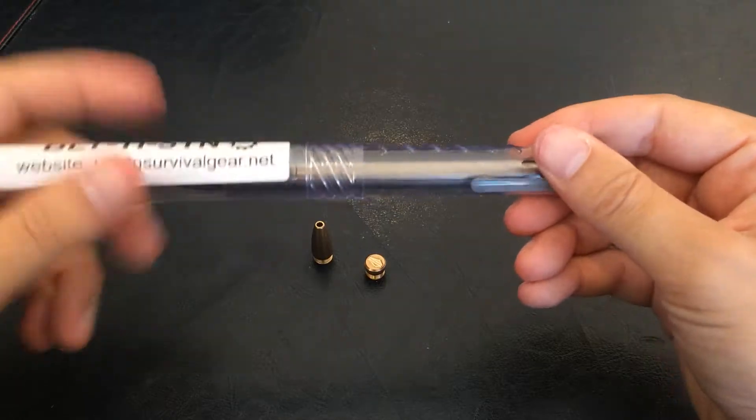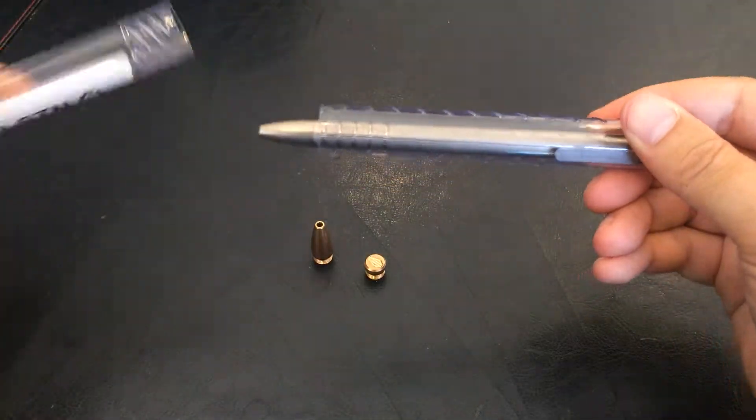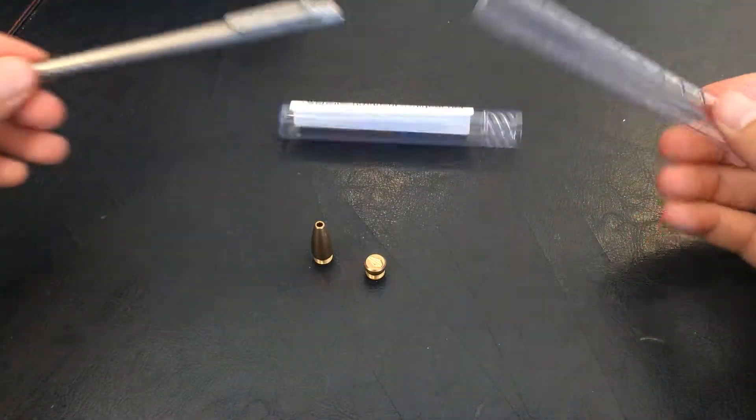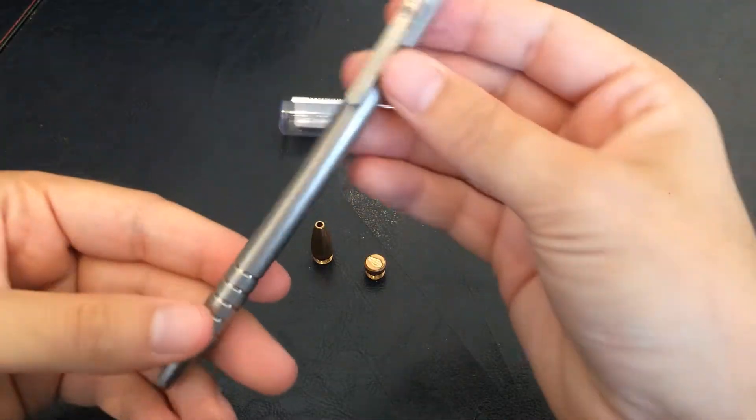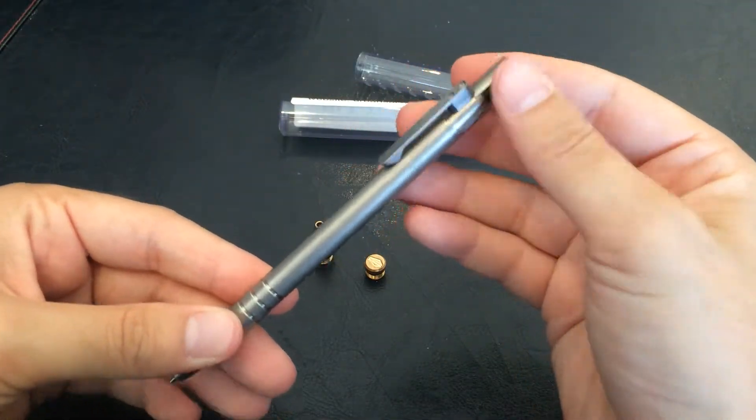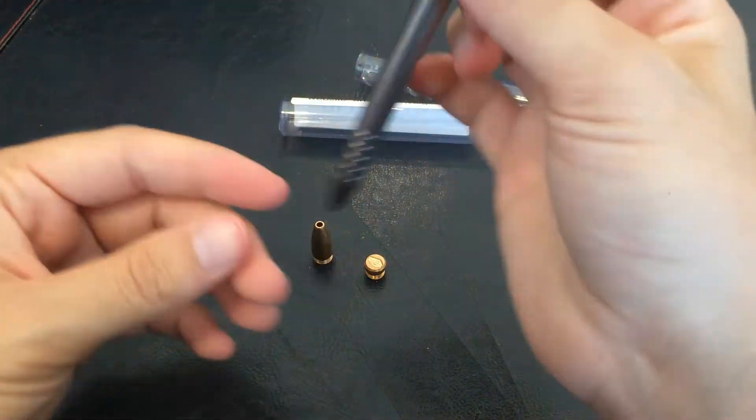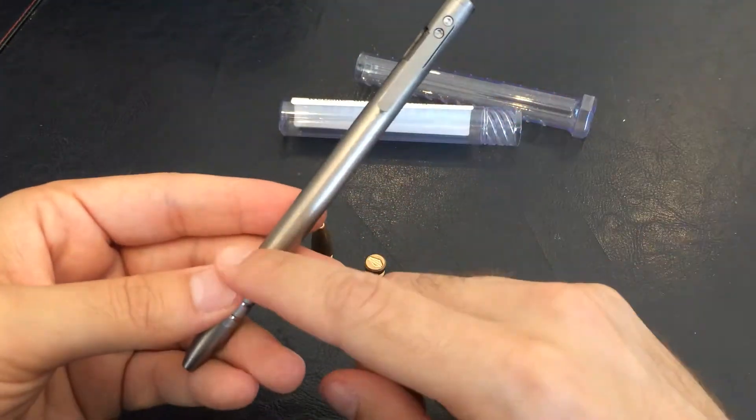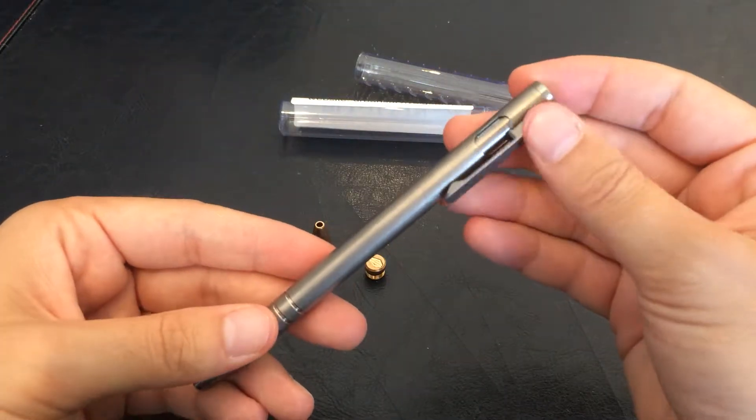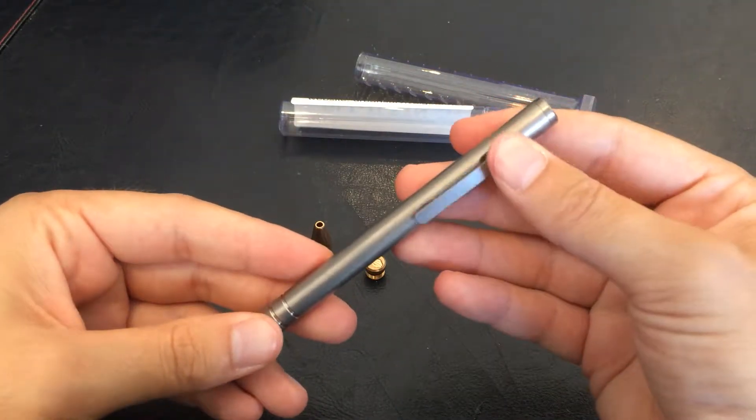To get to your pen, you just have to unscrew this, pretty easy. And there you go, there is the titanium stonewash pen. This is a gel refill, but you can get it with another refill.